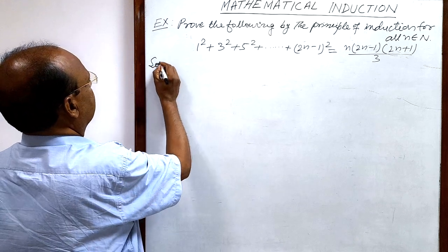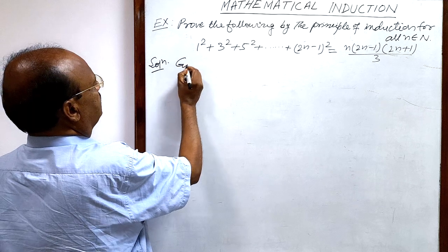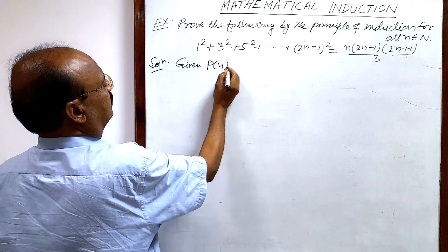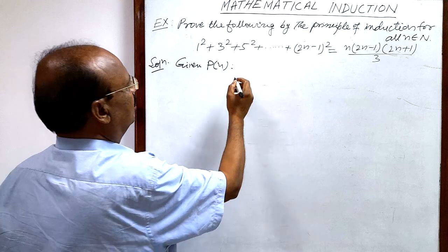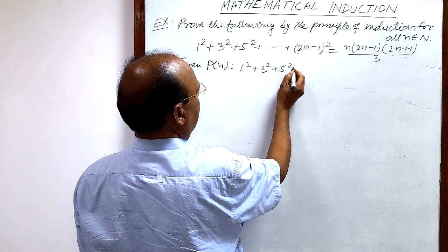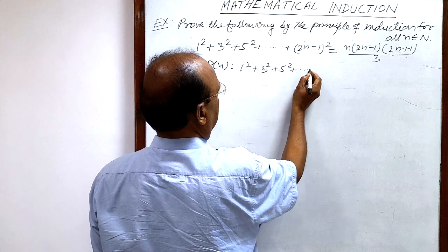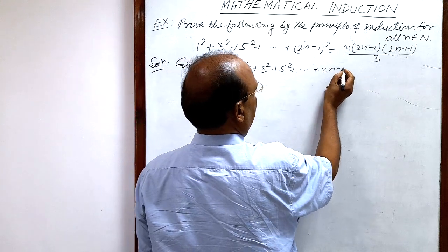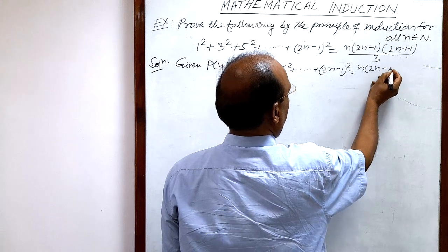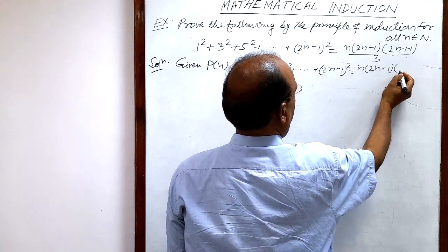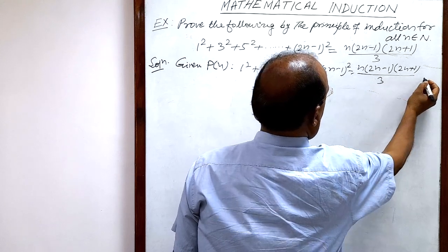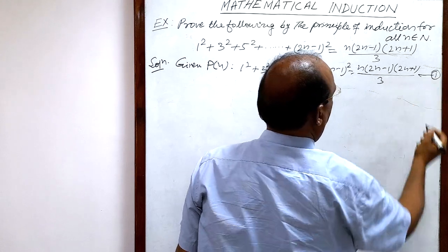So let us see the solution. This is the given mathematical statement Pn: 1² + 3² + 5² + ... + (2n−1)² = n(2n−1)(2n+1)/3. Call it relation number 1.